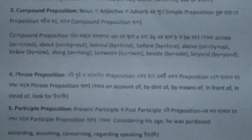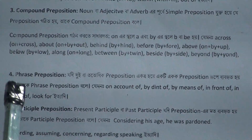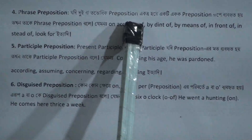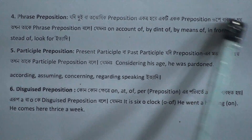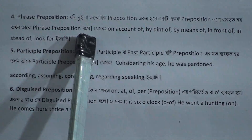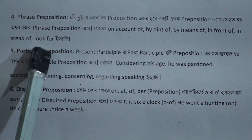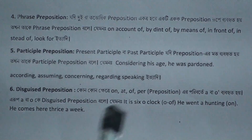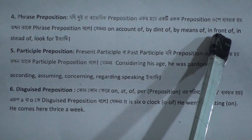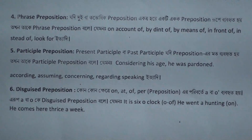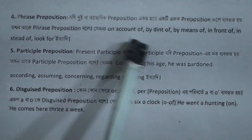Number four is phrase preposition. When two or more prepositions are joined together and used as one preposition, that is called a phrase preposition. Examples include: on account of, by dint of, by means of, in front of, in stead of, and look for.